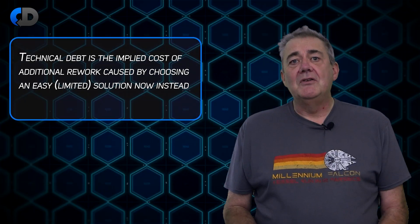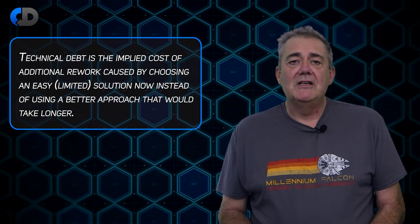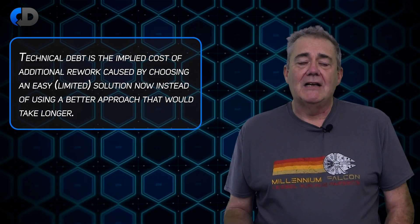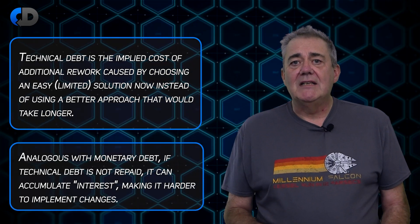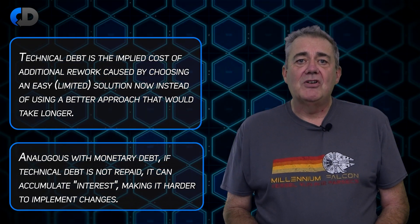Technical debt is one of those ideas — as soon as you hear it for the first time it's kind of obvious what it means. The concept of technical debt was invented by Ward Cunningham. Ward also invented the wiki, so here's what Wikipedia has to say on the topic: technical debt is the implied cost of additional rework caused by choosing an easy or limited solution now instead of using a better approach that would take longer. Analogous with monetary debt, if technical debt is not repaid it can accumulate interest, making it harder to implement changes over time.